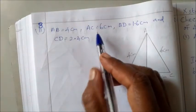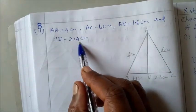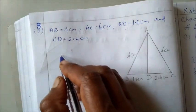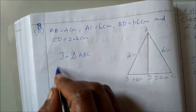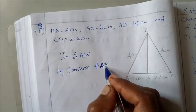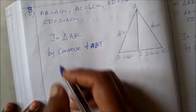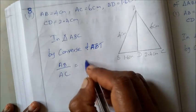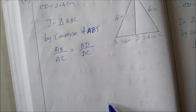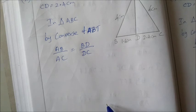For the second sum: AB equal to 4cm, AC equal to 6cm, BD equal to 1.6cm, and CD equal to 2.4cm. Draw the diagram and mark. In triangle ABC, by the converse of the angle bisector theorem, the result AB by AC equal to BD by DC. So AD is the angle bisector of angle A.